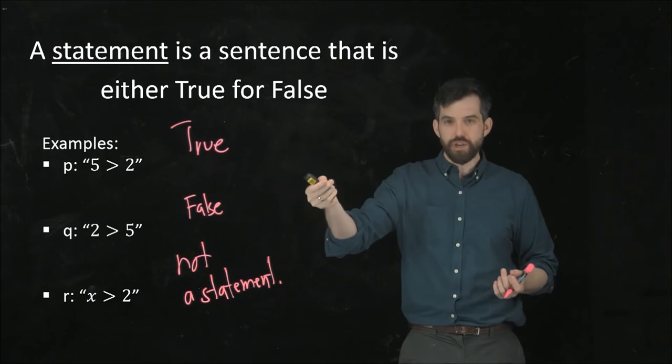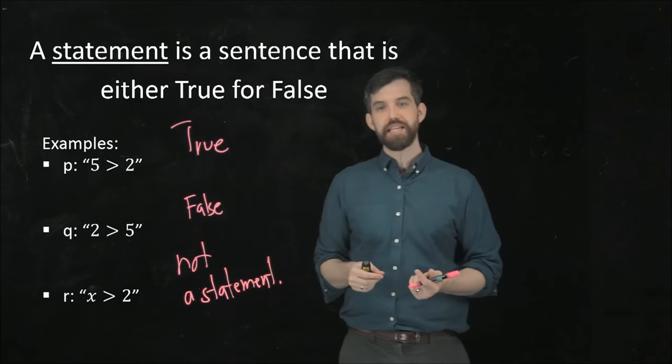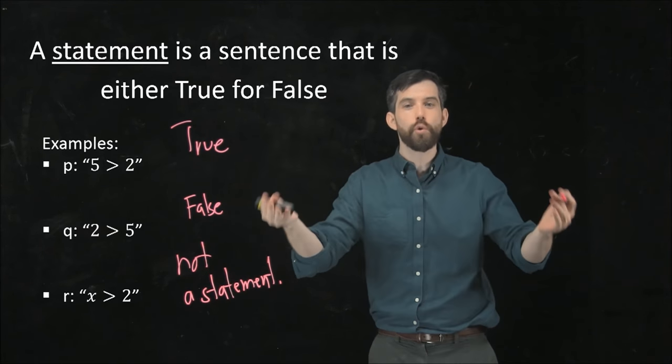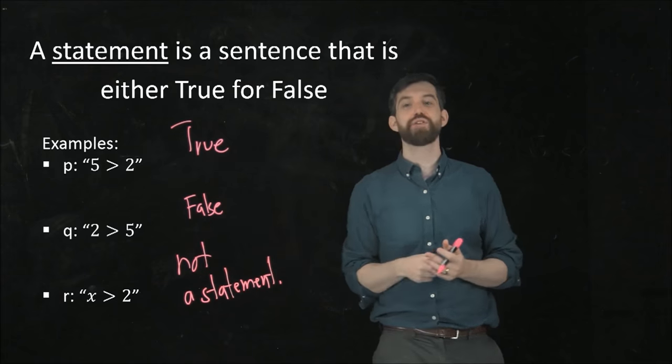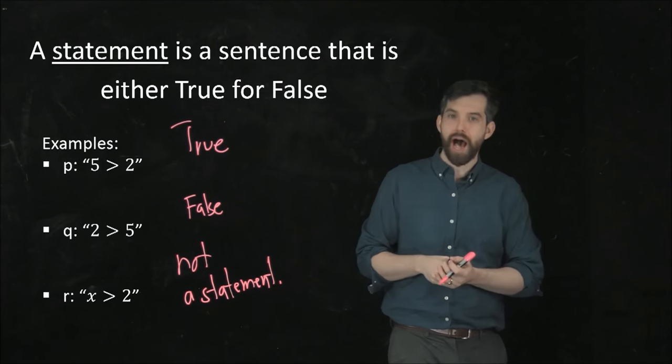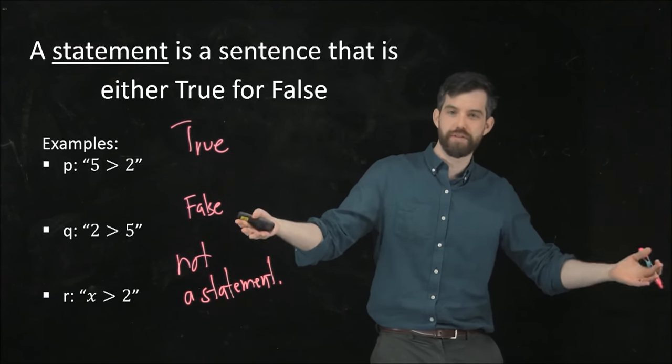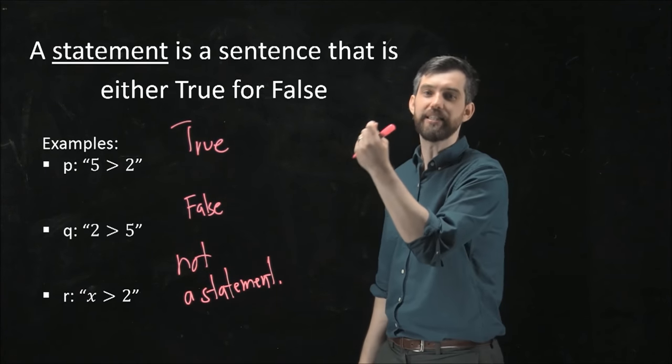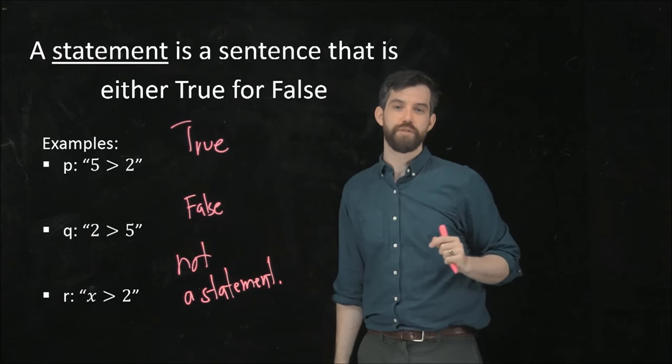And the p, q, and r that I write down, these are just a way to give a shorthand for my larger statement. For example, the statement that 5 is greater than 2, I don't necessarily want to write down 5 > 2 every single time. So, I can just use the shorthand by saying p is the statement 5 > 2.